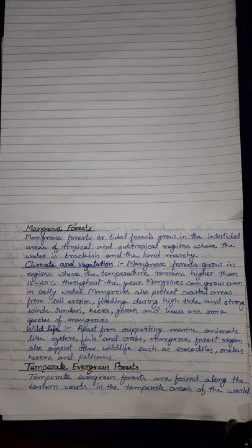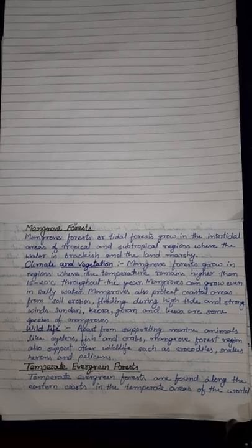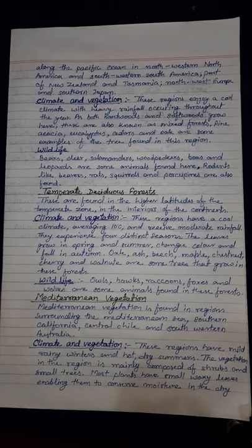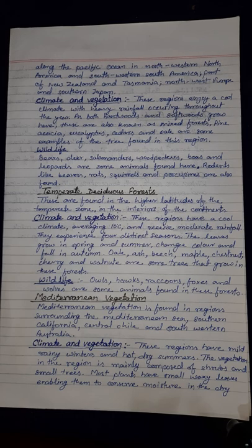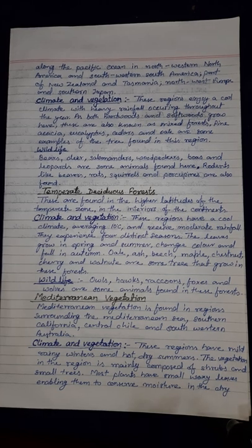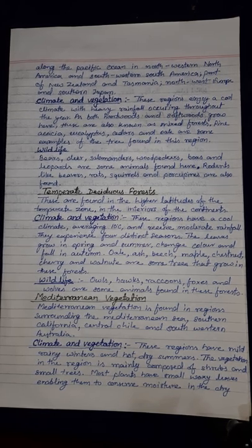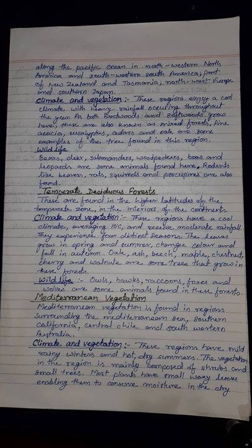Temperate evergreen forests are found along the eastern coast in the temperate areas of the world, along the Pacific Ocean in northwestern North America, southwestern South America, parts of New Zealand, northwestern Europe, and southern Japan. This region enjoys a cool climate with heavy rainfall occurring throughout the year.